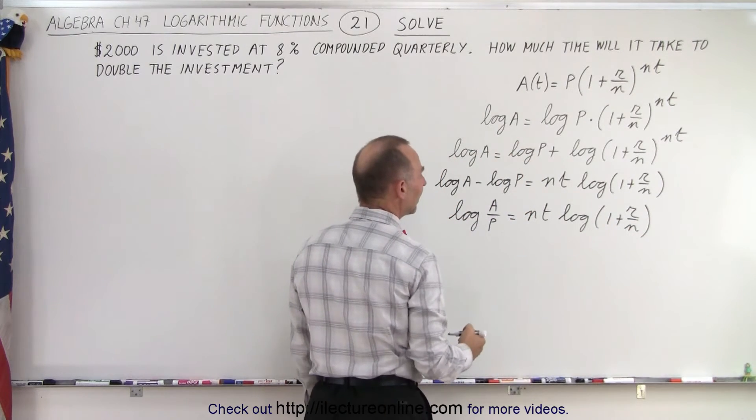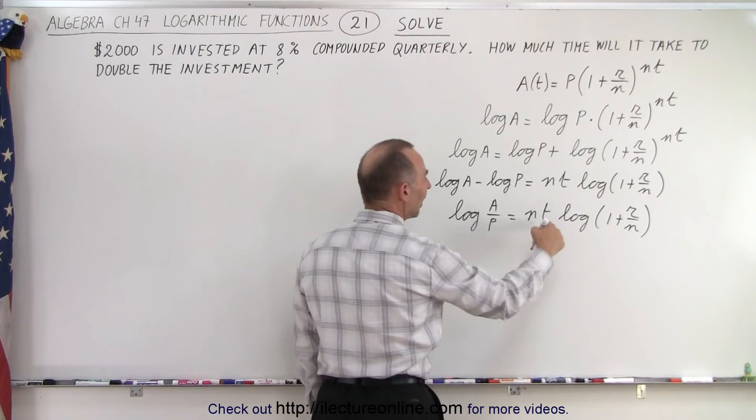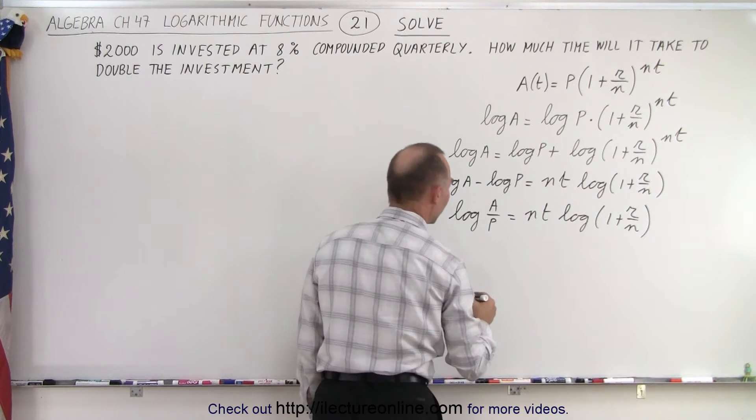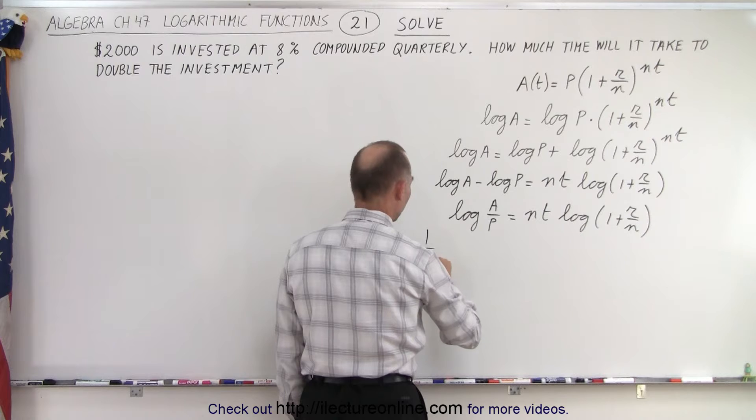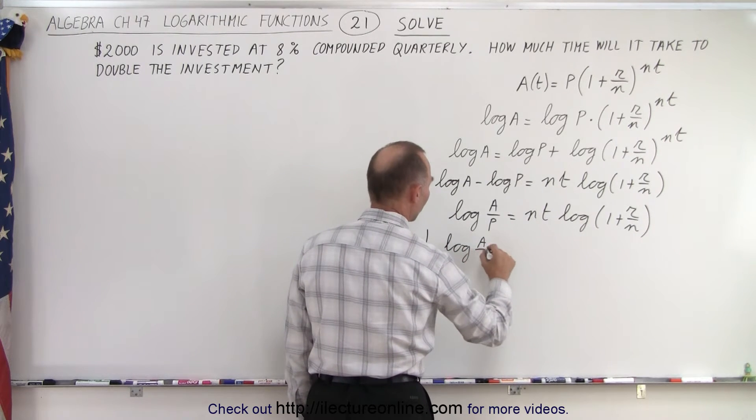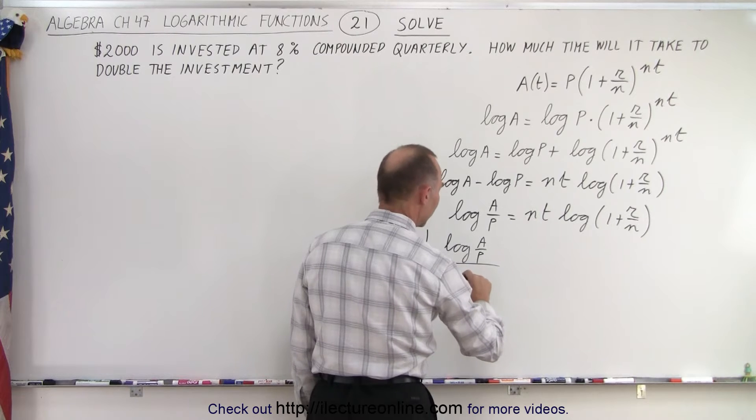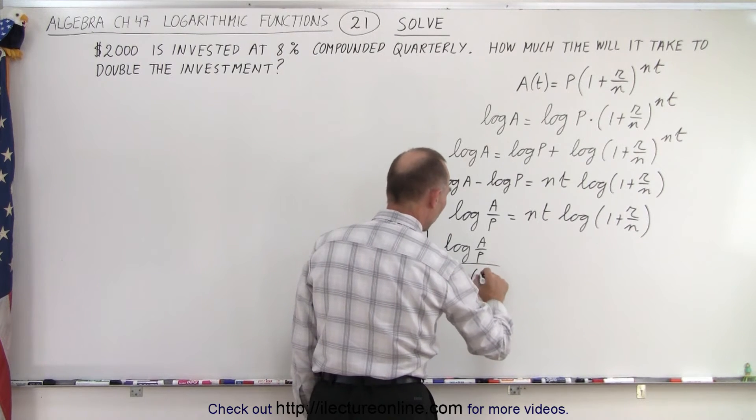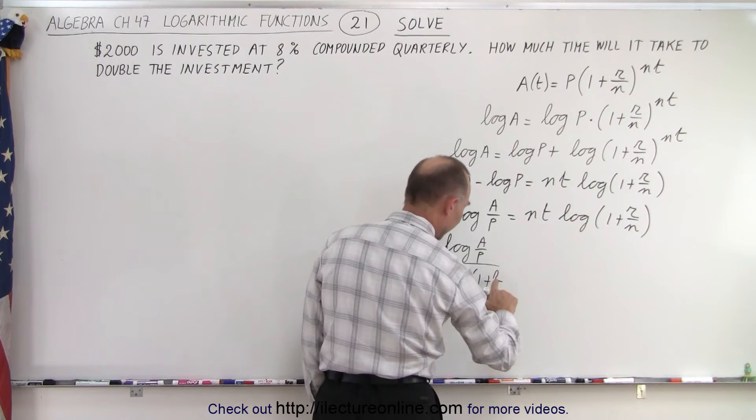And finally I can move the n and the log of this to the left side and leave t all by itself. So here we get 1 over n times the log of A over P divided by the log of 1 plus r over n.